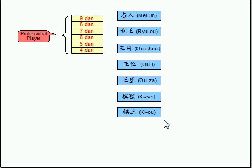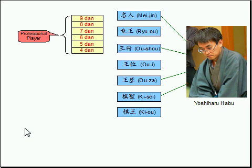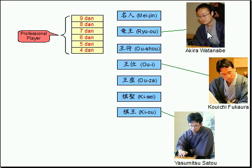Each title is held by its defending champion, and each title match is played once every year. The players who now have these titles are Yoshiharu Habu, who has 4 titles. He once achieved Grand Slam, where he had all the titles at the same time. Akira Watanabe has Ryuou, and right now Habu is in the middle of challenging him. And Koichi Fukaura has Ooi, and Yasumitsu Sato has Kiyou.